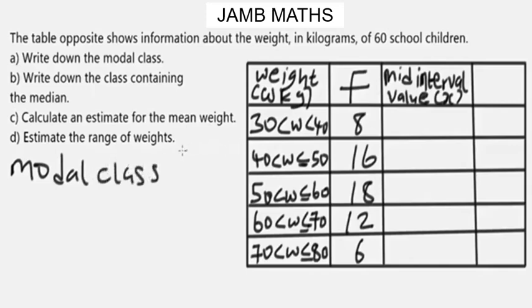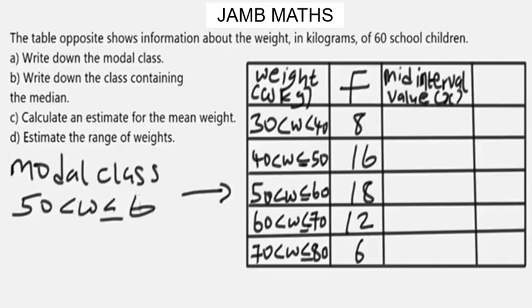The modal class is the class with the highest occurring frequency — that is, the value occurring the most. When we check this grouped frequency table, the highest frequency is 18. So the modal class is 50 < w ≤ 60.